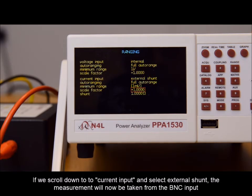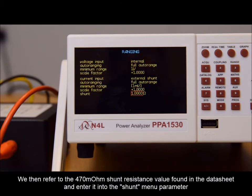We then refer to the 470 milliohm shunt resistance value found in the datasheet and enter it into the shunt parameter.